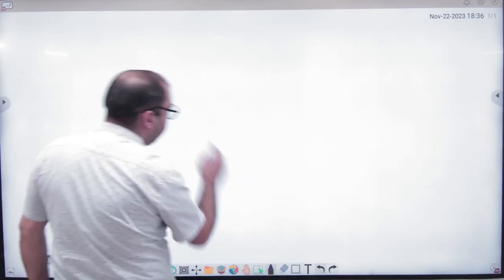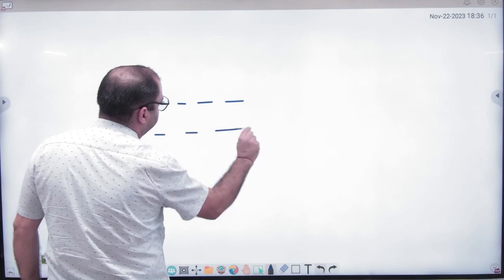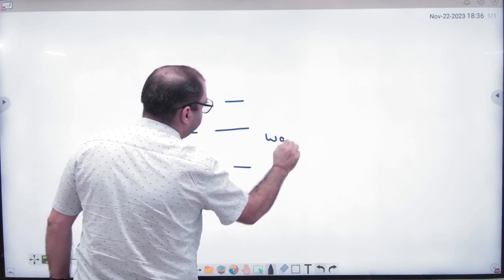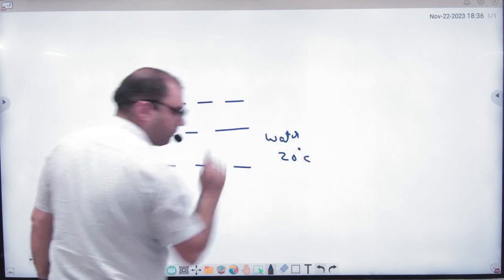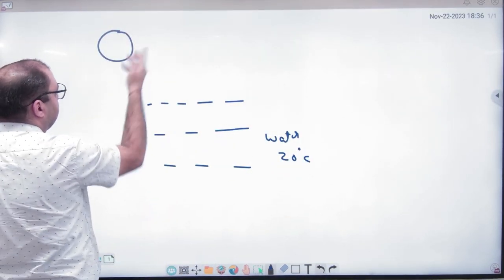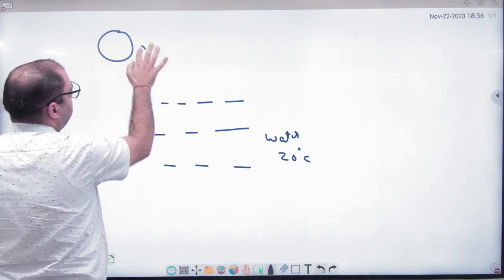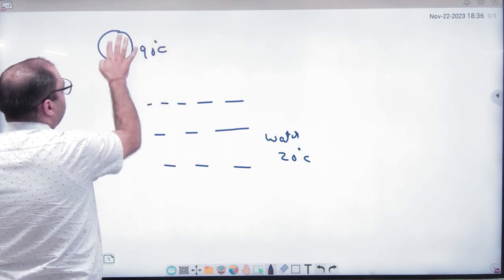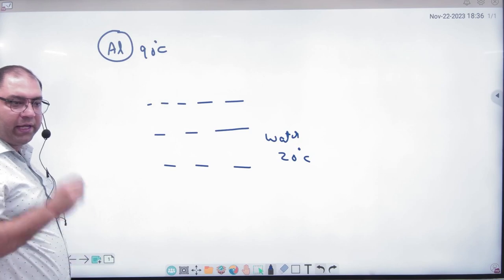So the concept of calorimetry is something like that. Suppose you have water, and the temperature of water is 20 degrees Celsius. You have a ball, a sphere, a material which is 90 degrees Celsius. Imagine that it is aluminum.